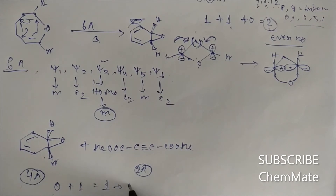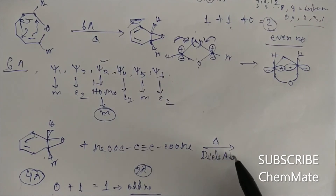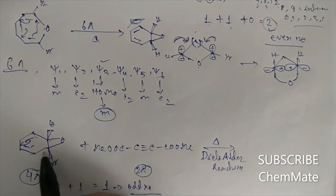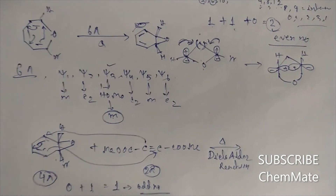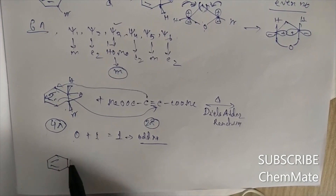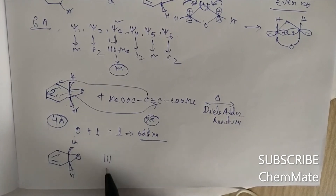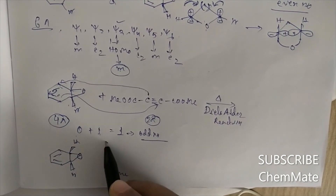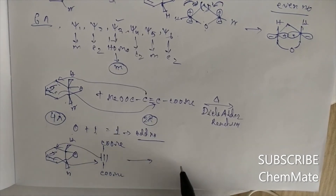This total of 1 is an odd number, so the reaction between these two components is thermally allowed. This is the Diels-Alder reaction. Drawing it out: here is the oxygen, here is the triple bond — C with double bond — so it will form a bridged bicyclic system.